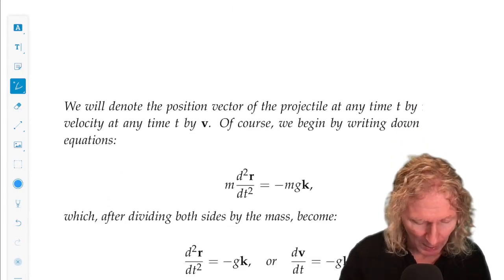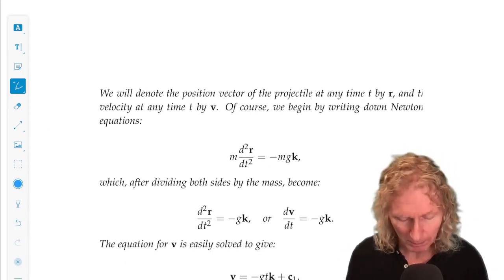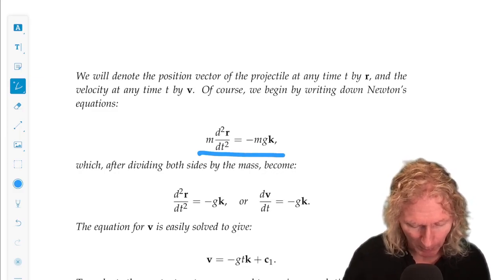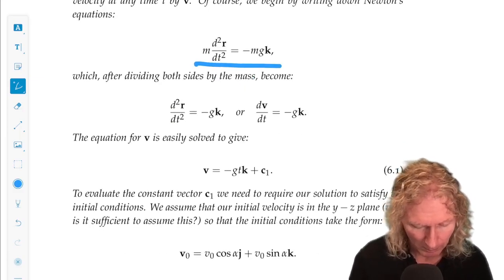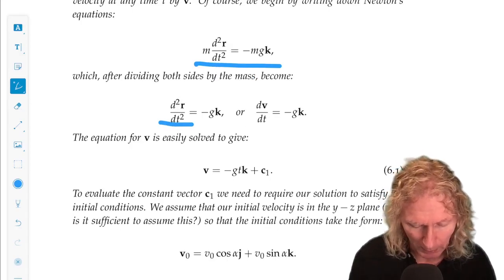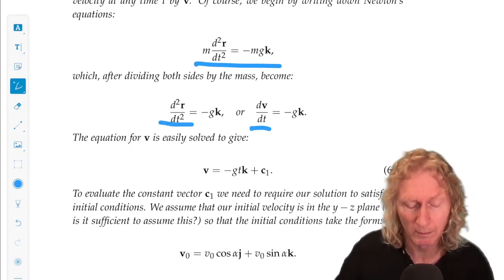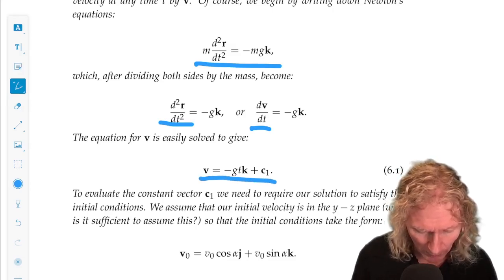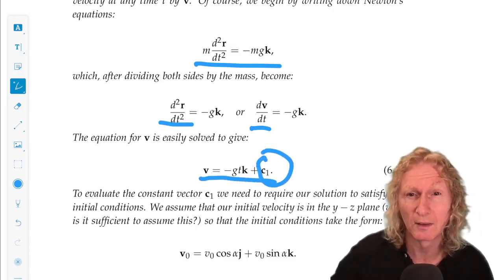Okay, so we write down Newton's second law. And this is it. We can divide out m on both sides. Remember, the second derivative of r with respect to t twice is dv/dt, v is velocity. We can integrate that once. Remember that the constant of integration is a vector.